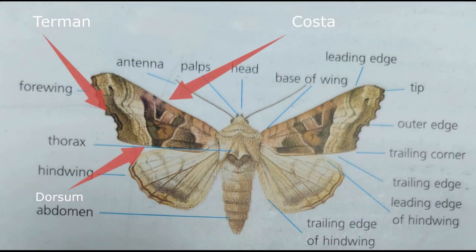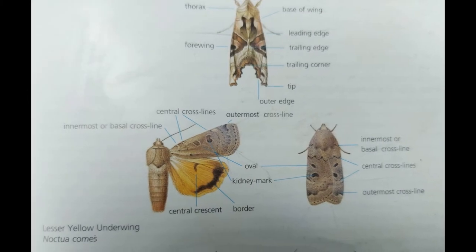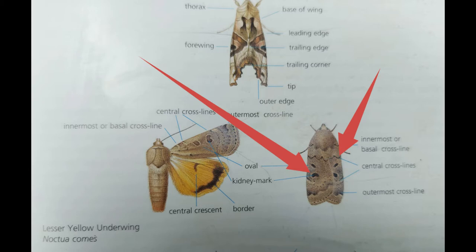Here we have a basic illustration of a moth's anatomy showing the anatomical terms used in most moth guides. Learning all these parts and terms is going to greatly help you in identifying moths later on. On the moth's forewing we can see some kidney marks, oval marks, and some cross lines. These are all key identification features and you must pay attention to these. Some of the kidney marks may be light-centred, they may be dark-centred; the cross lines might be wavy, they might be straight, so make a note of them.